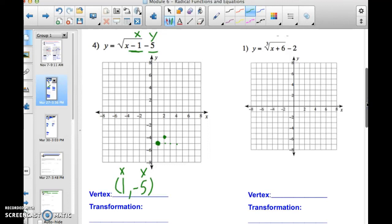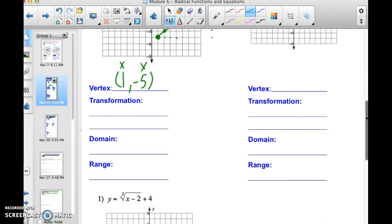...up two, and then I can just estimate over nine, up three. There is the new function based off of the parent function, y equals the square root of x. So the y equals the square root of x minus one minus five is the graph in green. And from there I can discuss the transformation in words.